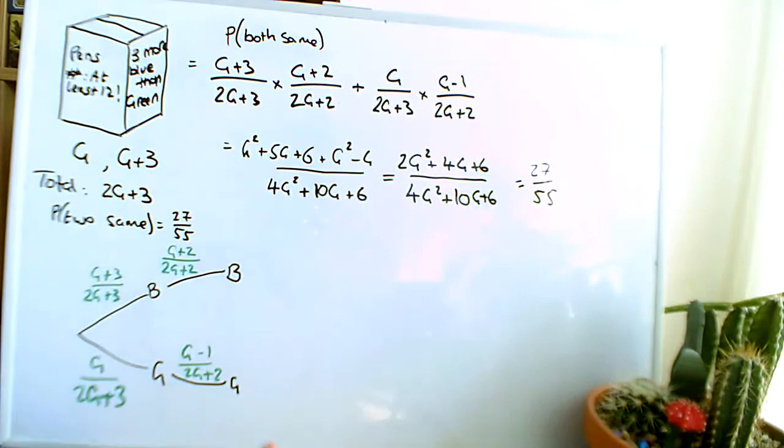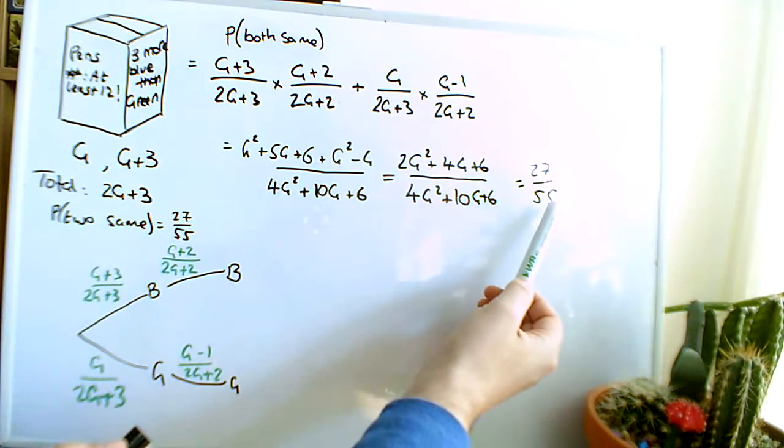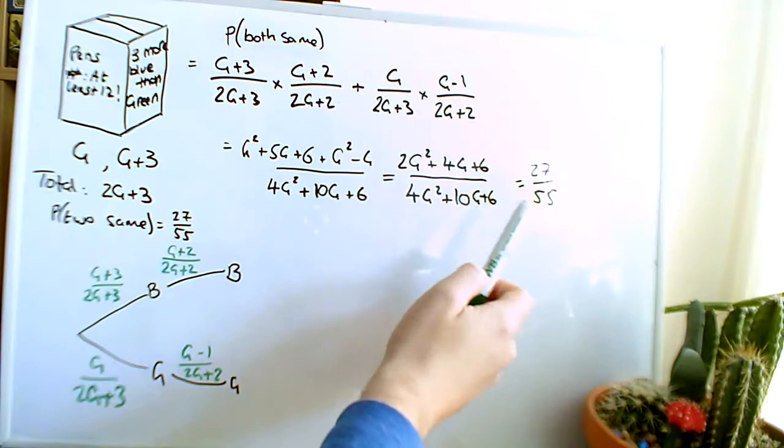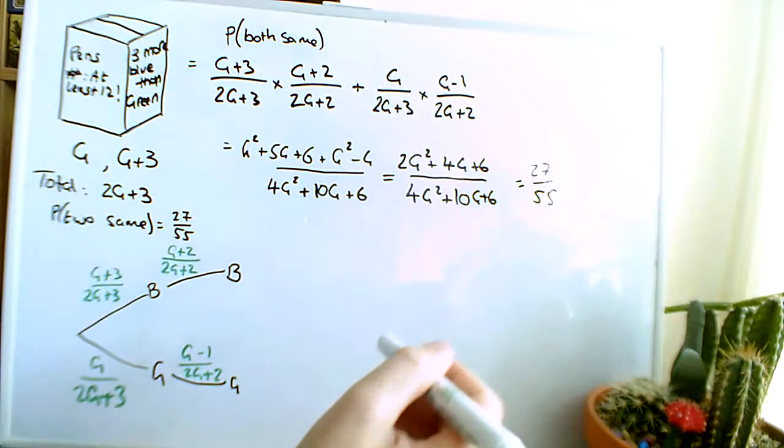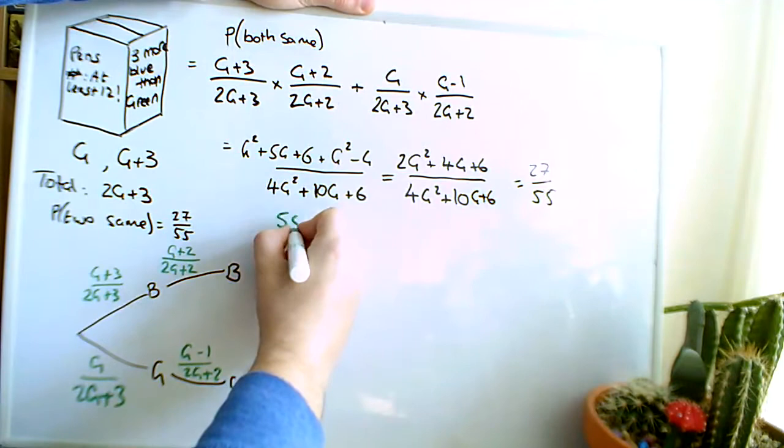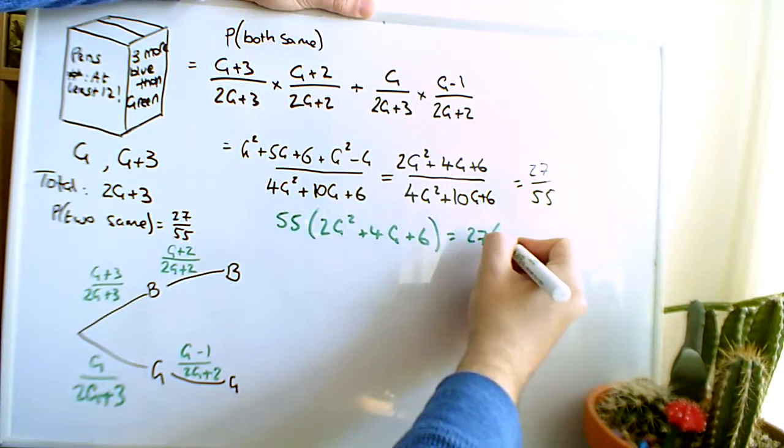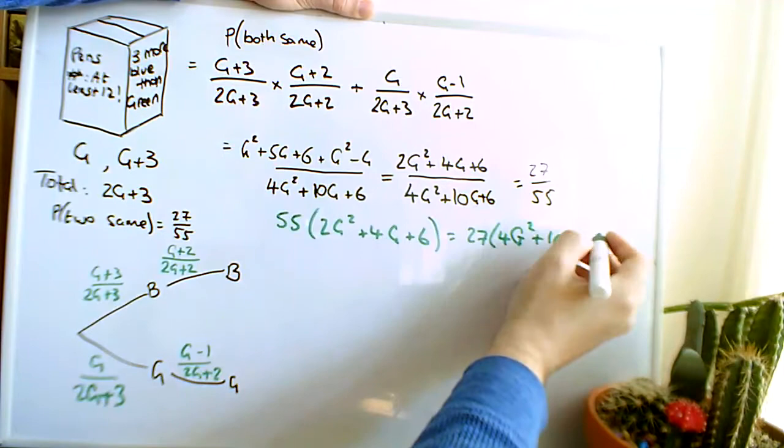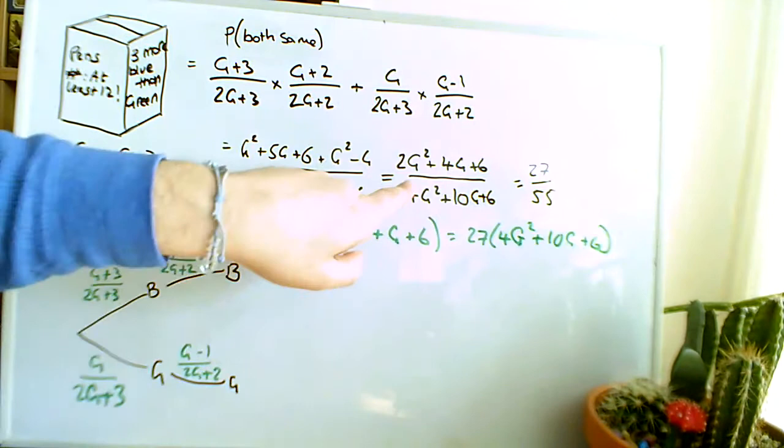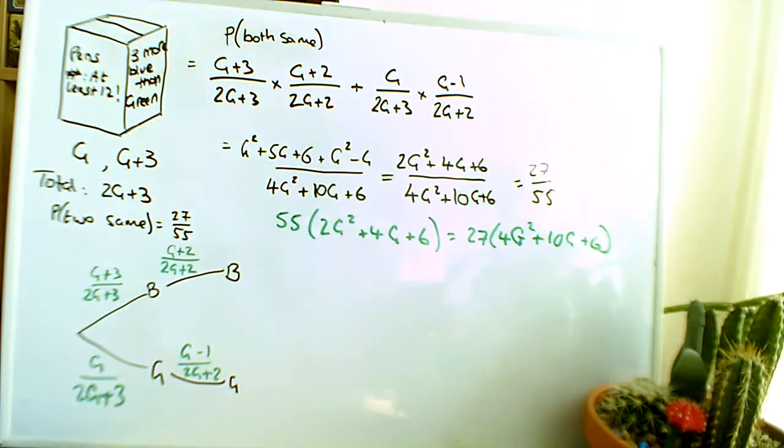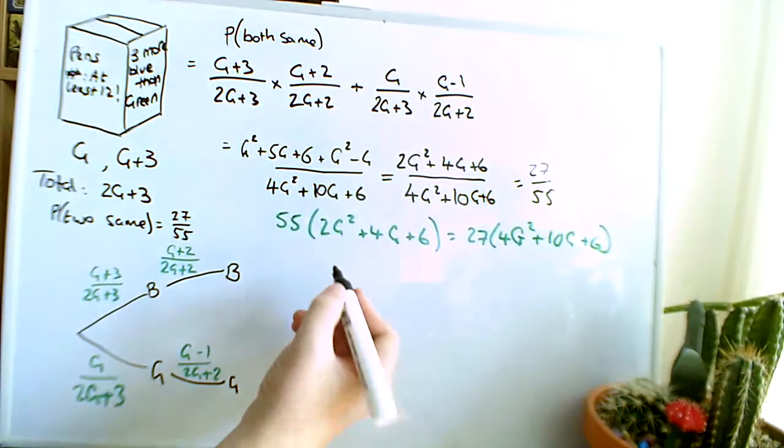So I can multiply both sides by the denominator, and both sides by the denominator, effectively cross multiplication, so we end up with 55 times 2G squared plus 4G plus 6 is equal to 27 times 4G squared plus 10G plus 6. Now the sharp-eyed amongst you will have noticed that here you could have divided everything by 2 to give yourself some nice easy numbers. I'm an idiot, I didn't do that, but we're just going to do this the hard way.